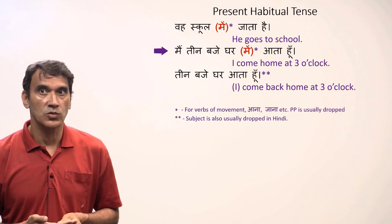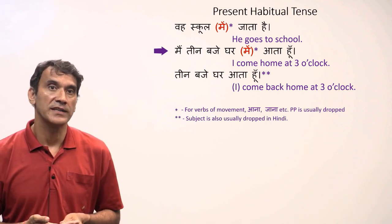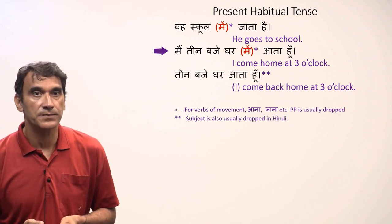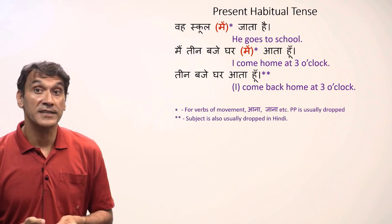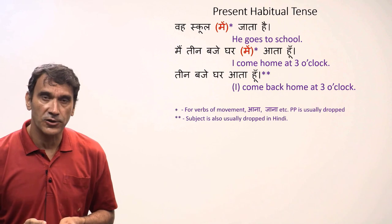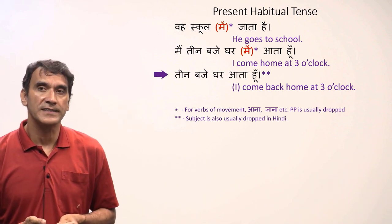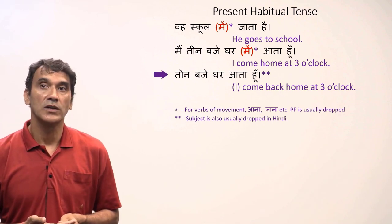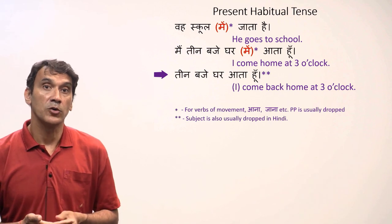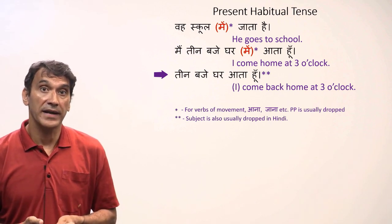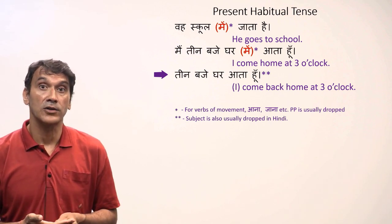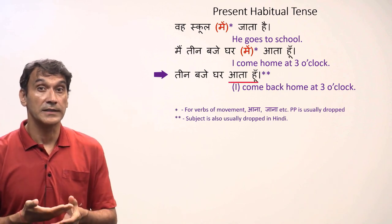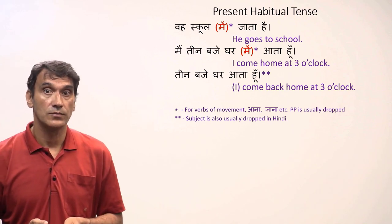'Main teen baje ghar aata hoon' — I come home at three o'clock; again, the postposition 'mein' is dropped. In Hindi, the subject is also often dropped because context usually defines it. For example, 'teen baje ghar aata hoon' — I come home at three o'clock — the subject 'main' is not stated because it is clearly indicated by the tense form 'aata hoon.'